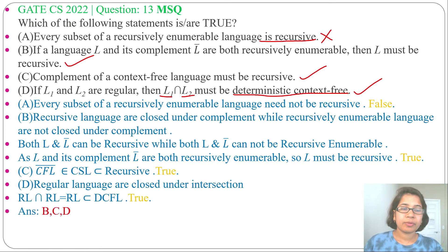So the answer will be options B, C, and D. I already discussed closure properties of all languages—just go through that and you can easily solve this question. If this lecture is helpful for you, please like and subscribe. Thank you.